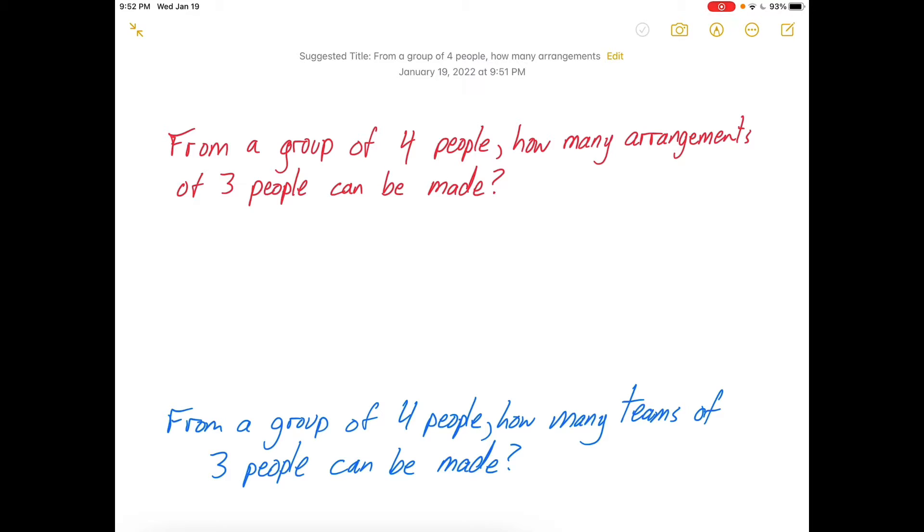Let's think about two little questions here. From a group of four people, how many arrangements of three people can you make? Let's say these people have first names that start with A, B, C, and D. You could have ABC, ABD, ACB, and I could write them all out.